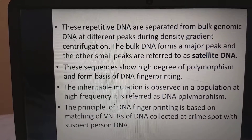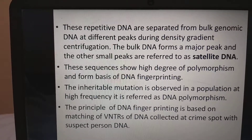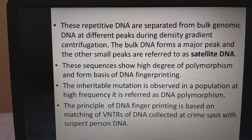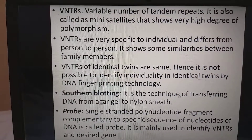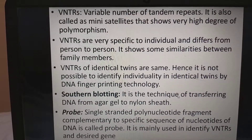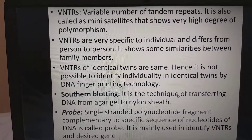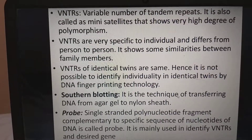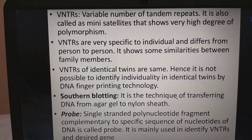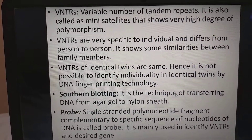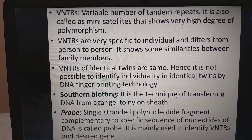The principle of DNA fingerprinting is based on matching VNTRs (Variable Number of Tandem Repeats) — DNA collected at a crime spot with the suspect person's DNA. VNTRs are also called mini satellites and show a very high degree of polymorphism. VNTRs are very specific to individuals and differ from person to person, though they show some similarities between family members. VNTRs of identical twins are the same; hence it is not possible to identify individuality in identical twins by DNA fingerprinting technology.